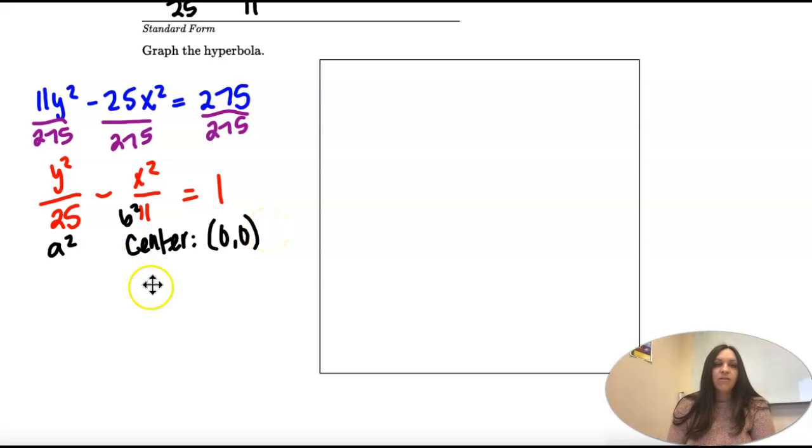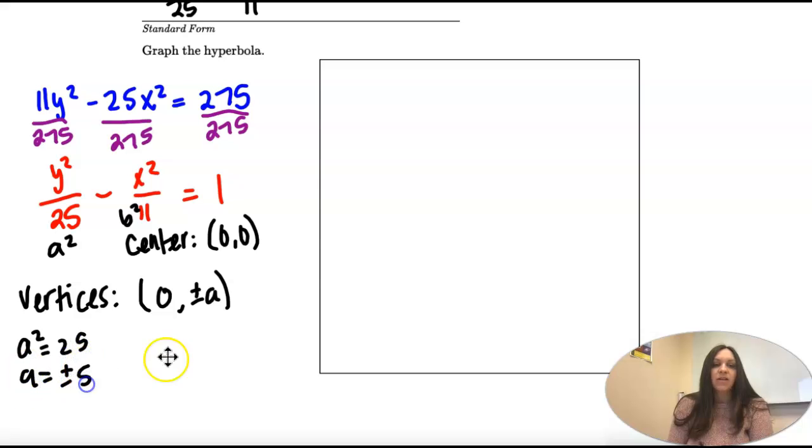So when we graph our vertices, since we're on the y-axis, they're going to be on the y-axis. So if a squared is 25, a is plus or minus 5. So our vertices are going to be a positive 5 and negative 5.